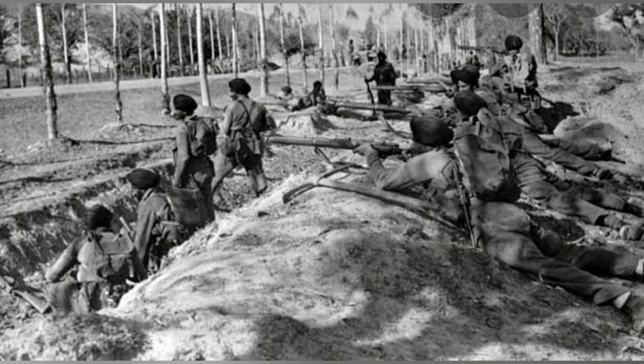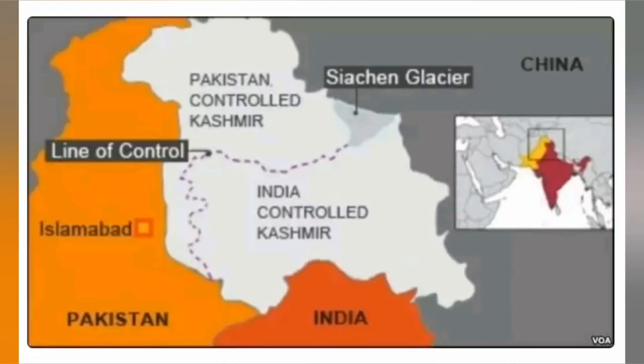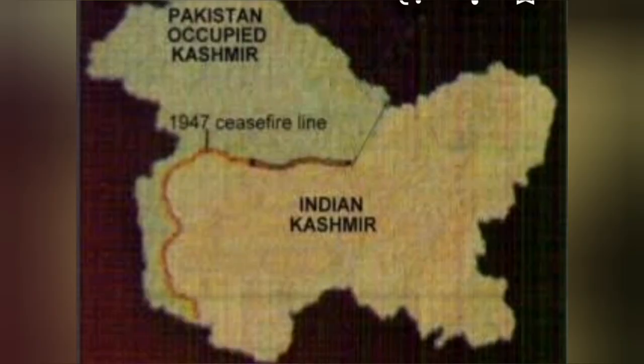At the end of the war in 1949, the region of Jammu and Kashmir was divided into two regions — one is Indian-controlled Kashmir and another is Pakistan-controlled Kashmir. Both regions were separated by a specific line called the Ceasefire Line. The Ceasefire Line does not legally recognize as an international boundary.